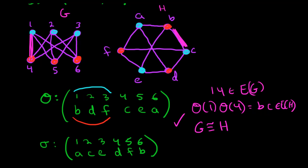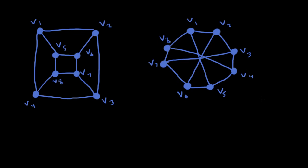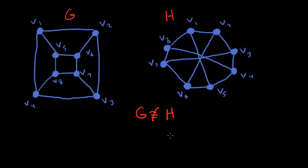Now I want to show you another example with more vertices — we actually have 8 vertices in each of these two graphs, and lots of edges. Over here we have 8 vertices: 4 around the outside, 4 around the inside, and 4 that go across, so that's 12 edges. Over here we also have 8 vertices: 8 edges around the outside and 4 through the middle, also 12 edges. The number of vertices and edges are the same, but if you try to find a mapping, you're going to run into problems, because these are not isomorphic.